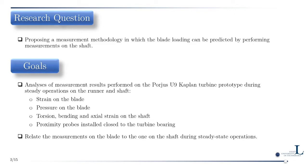This project was initiated to propose a measurement methodology in which blade loading can be predicted by performing measurements on the shaft. The goals include analyzing measurement results from the Porsi U9 Kaplan unit during steady-state operating points on both the runner and the shaft. Various sensors were used on rotating and stationary parts: pressure and strain gauges on the blade, torsion, bending, and axial strain measurements on the shaft, and proximity probes near the turbine bearing. The goal was to relate blade measurements to shaft measurements during steady-state operations.